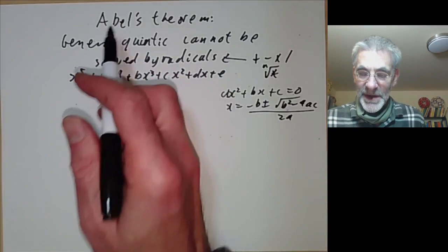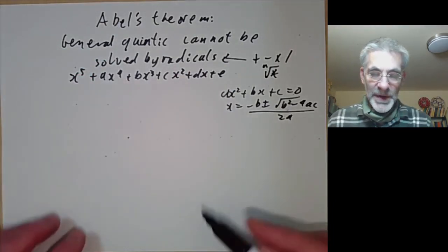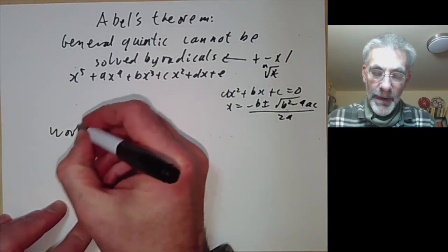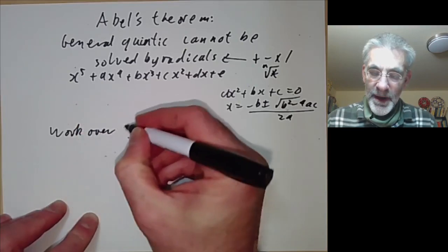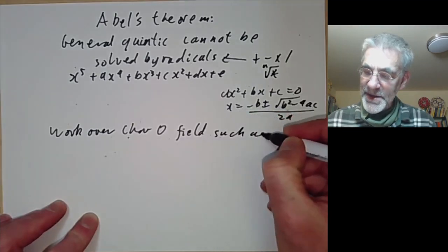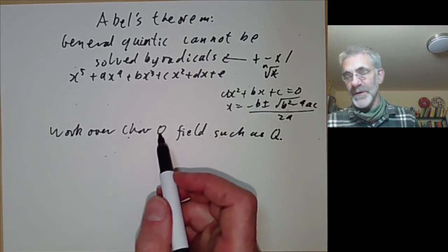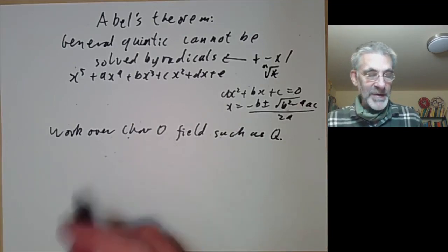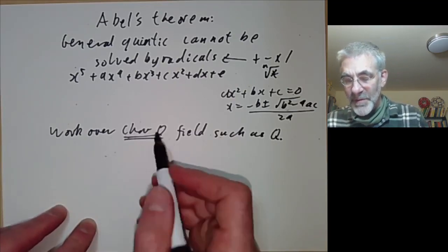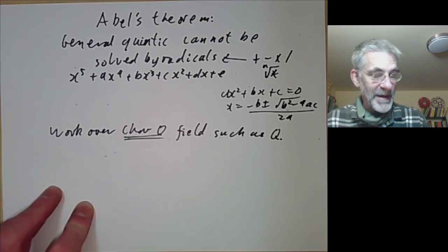What Abel showed is that you can't do this for degree 5 equations. First of all, we're going to work over a characteristic 0 field such as the rationals. There are some additional complications for fields of characteristic greater than 0 that I'll occasionally mention. We'll usually have a default assumption that the field is characteristic 0 unless stated otherwise.